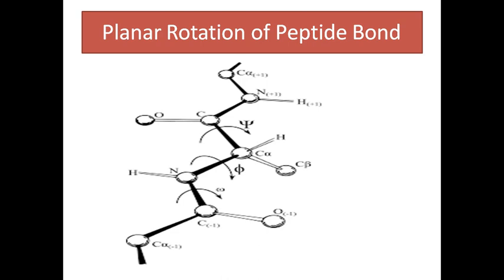Now, planar rotation of the peptide bond. In the fully extended polypeptide chain, the atoms of the peptide bond — that is C double bond O and NH — are coplanar. The backbone is represented as N-Cα-C, N-Cα-C. The yellow colored regions represent the peptide bonds. All atoms lie in a coplanar structure. The unshaded atoms, where C alpha, R, and H are unshaded, represent the Cα carbon, hydrogen atom and R group.